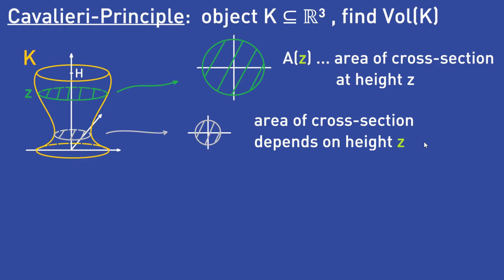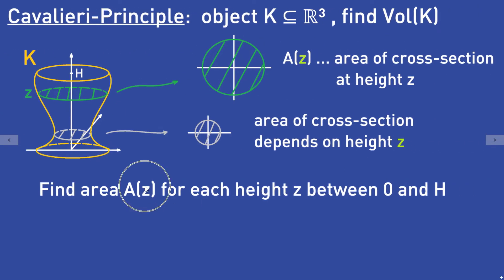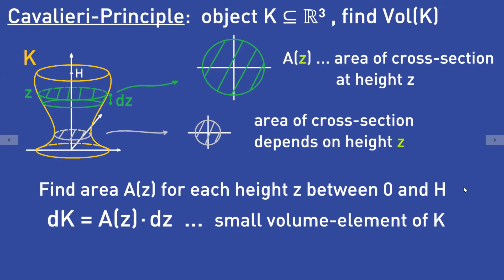You are interested in the area of the cut surface for each height z between 0 and capital H. That area is given by the formula A of z. Now that you have found that general formula A of z for the area of the cut surface at height z, you multiply A(z) with a very small variation in the z direction, which we call dz. By multiplying the area A(z) with dz we get a very small volume element of the object K at height z.